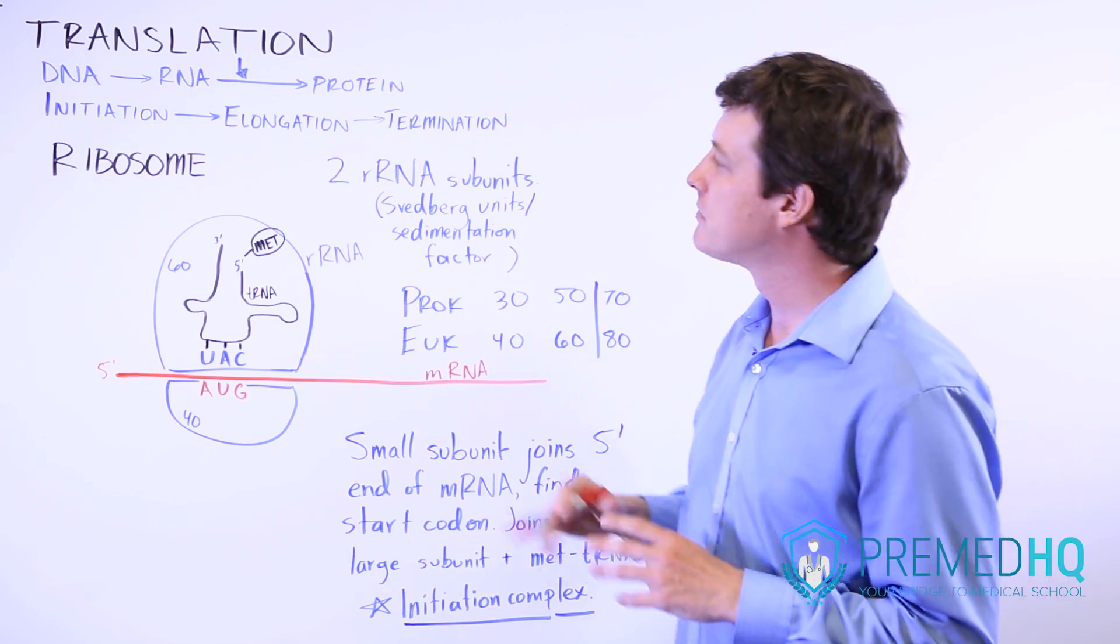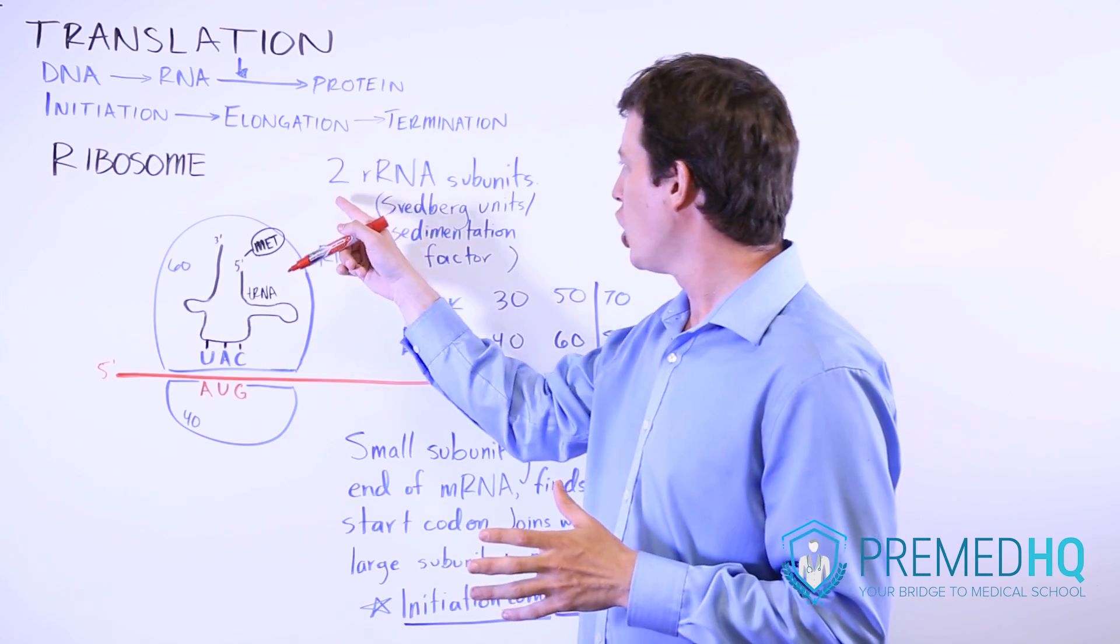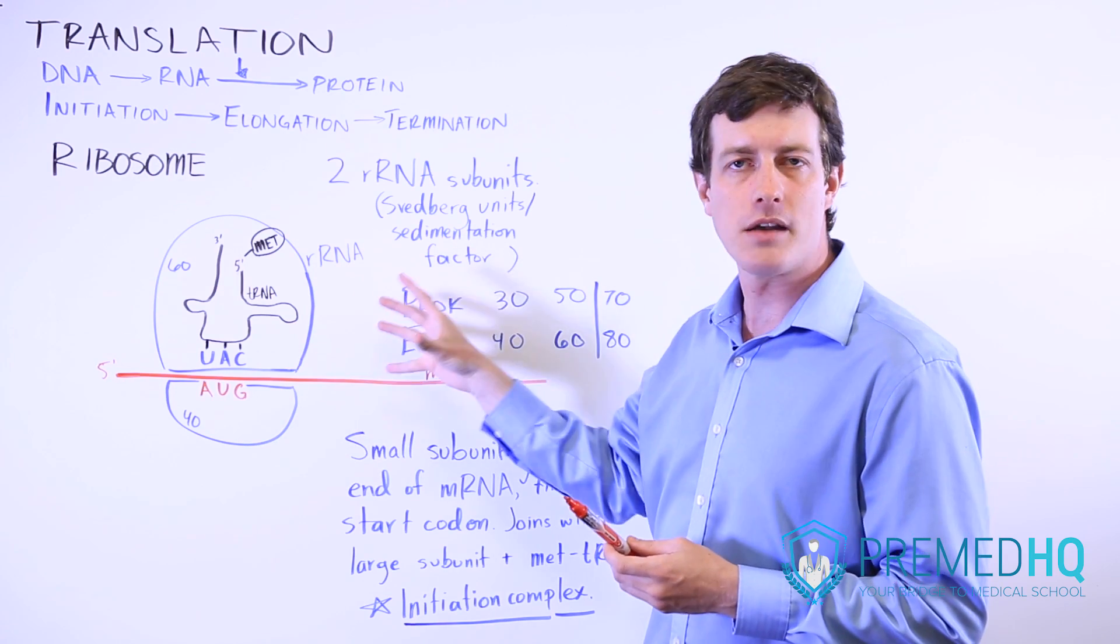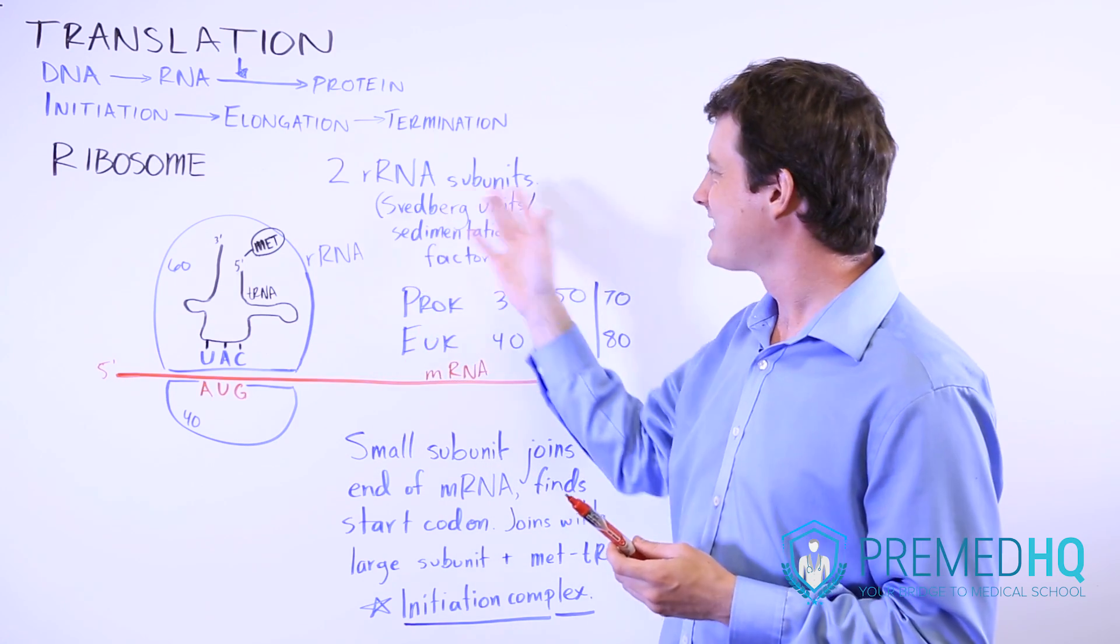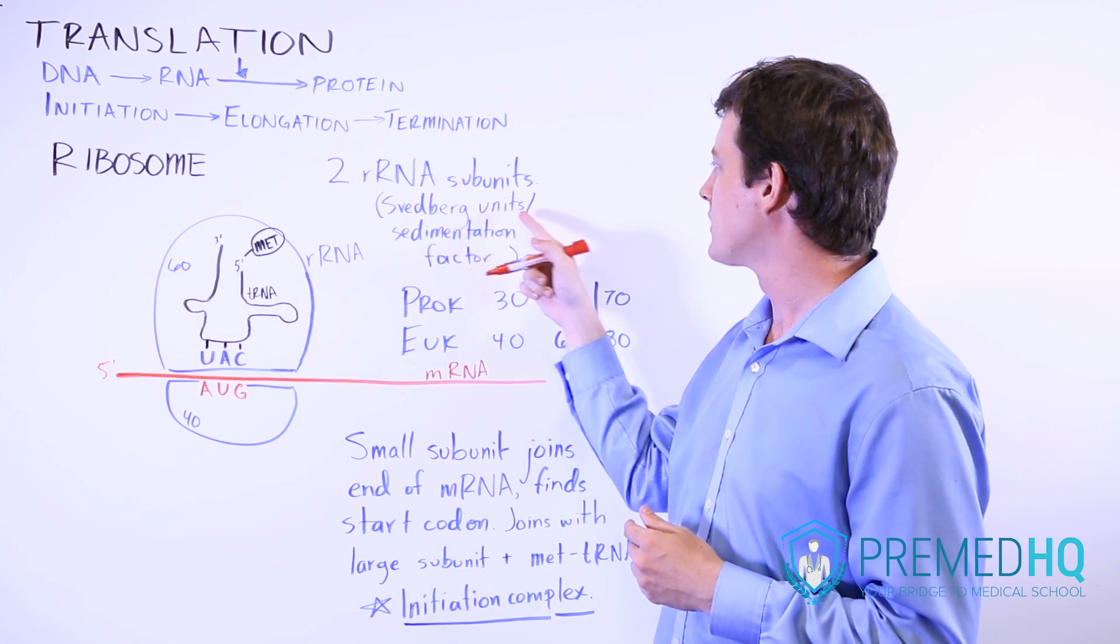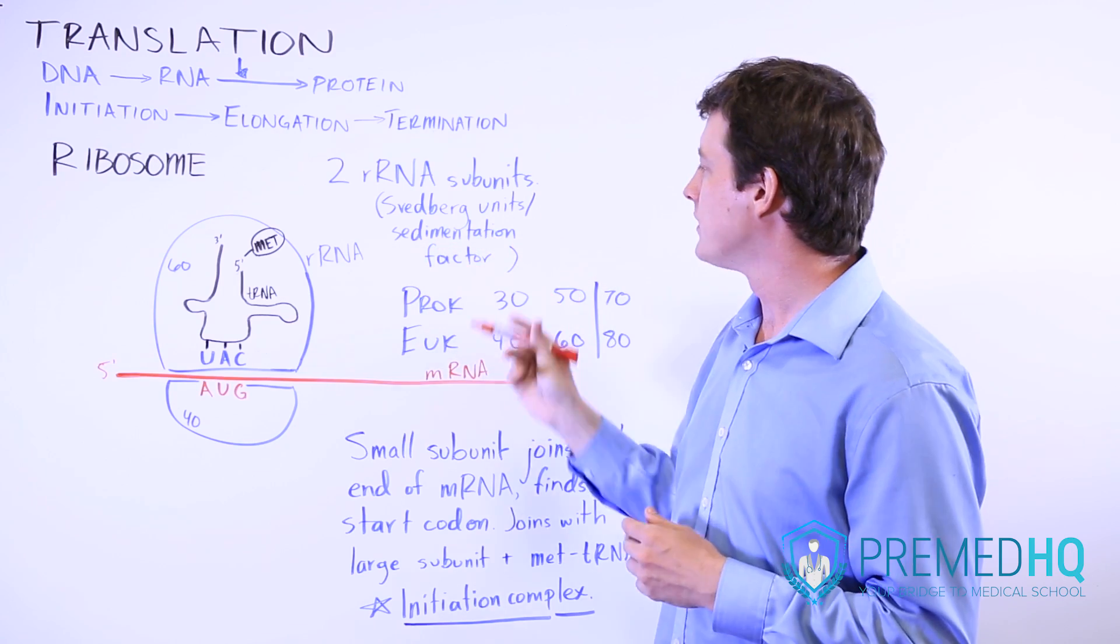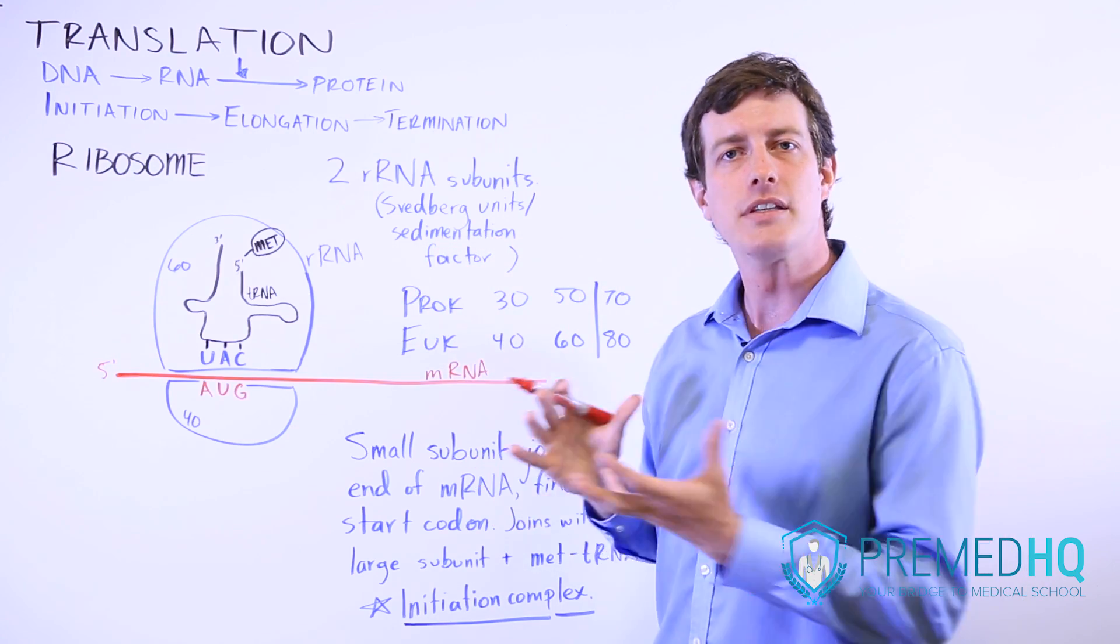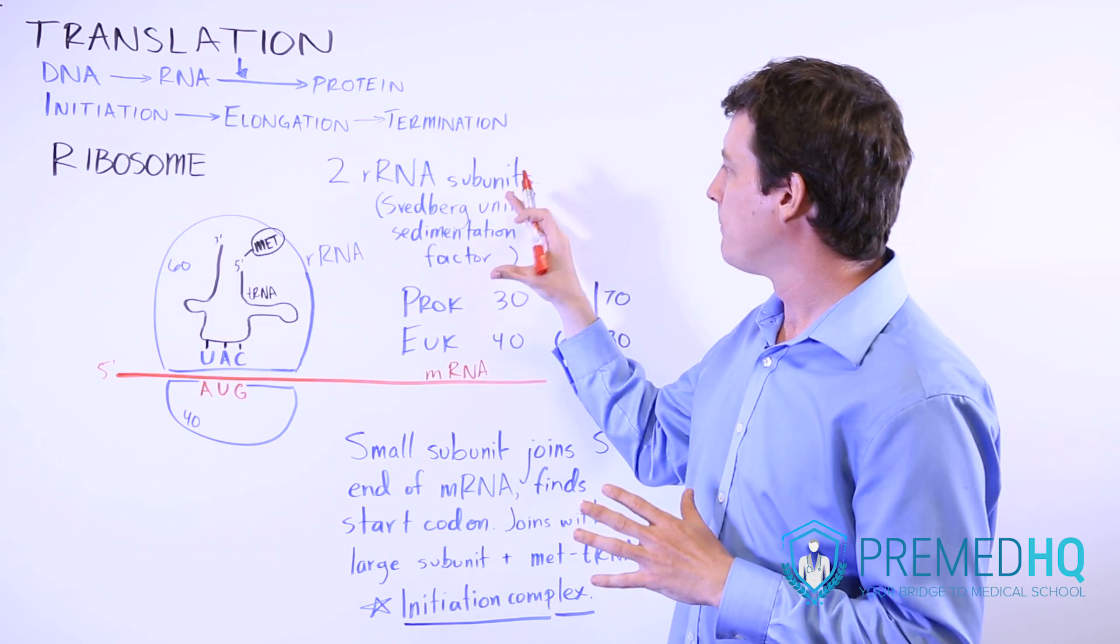A ribosome consists of two rRNA subunits, and these are measured and described in terms of their size. This size uses something known as a Svedberg unit or sedimentation factor, which is essentially a measurement of the size of some material.